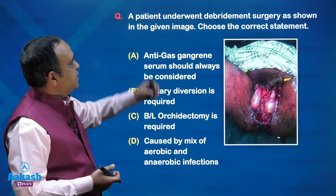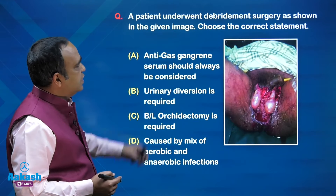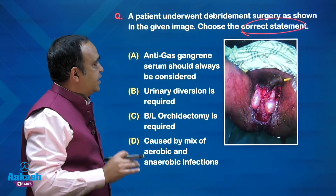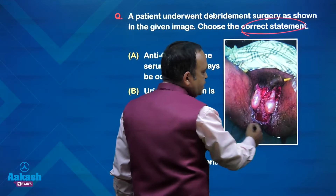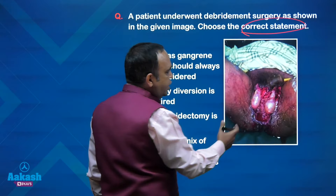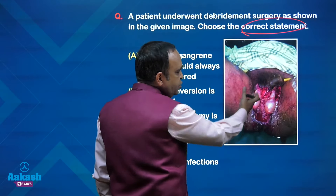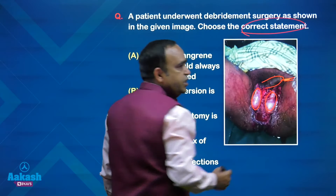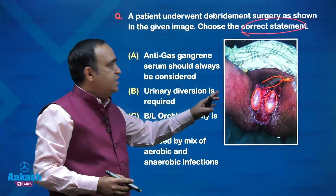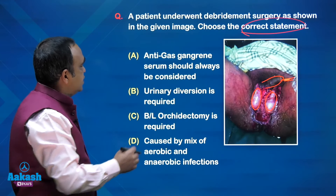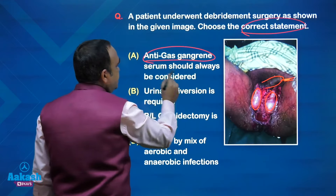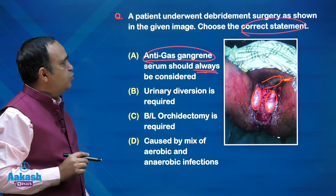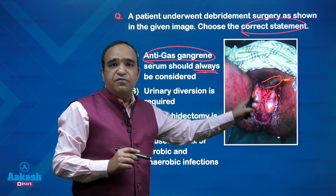The first question: a patient underwent debridement surgery as shown in the given image — choose the correct statement. The image shows the scrotal and surrounding area where debridement has been done. The testes are exposed and the penile structure is visible with the Foley's catheter inside. Let us look at the choices. The first choice states anti-gas gangrene serum should always be given. Note the word 'always' — remember, this is Fournier's gangrene.